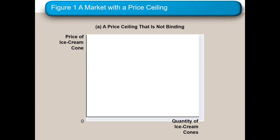The two we'll really be focusing on are price ceilings, which is the maximum price a good can be sold at. For a price ceiling to be binding, the price ceiling has to be below the equilibrium. I call that an upside down house because the ceiling is below the equilibrium.